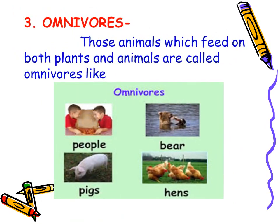The third type is omnivores. Those animals which feed on both plants and animals are called omnivores. These animals can eat both plants and animals depending on what they get. Examples are human beings like us, pigs, hens and bear.